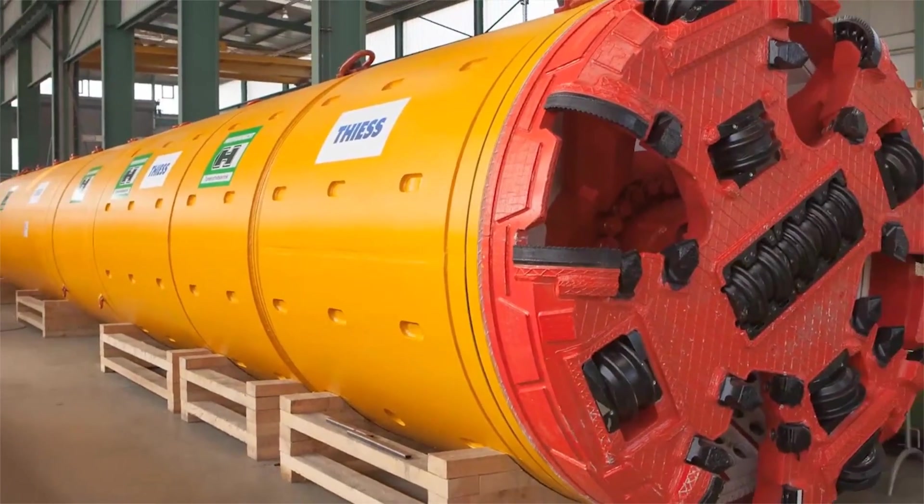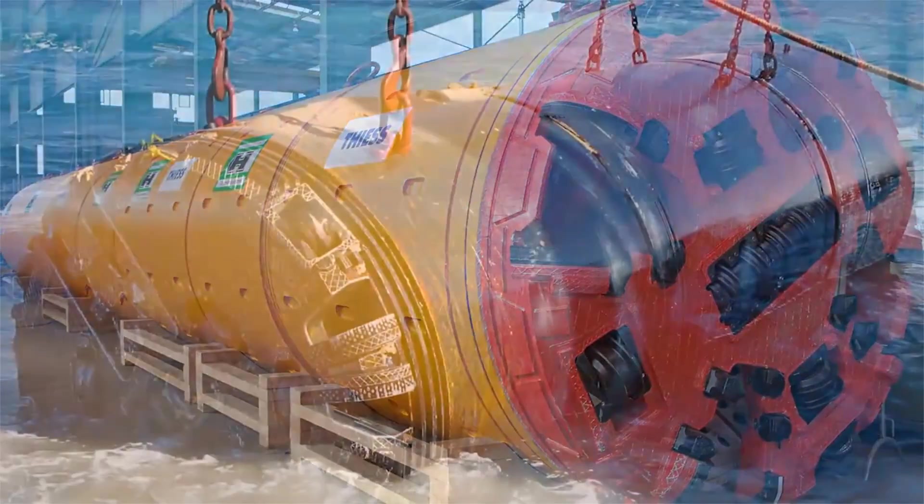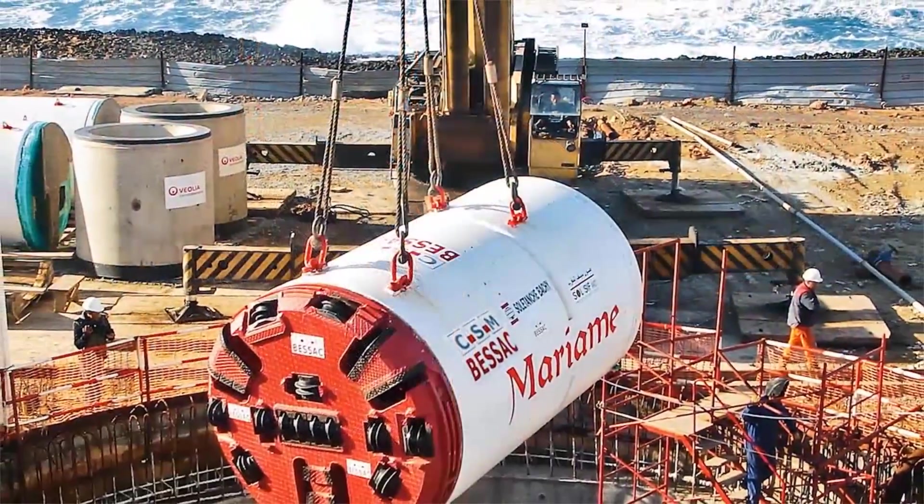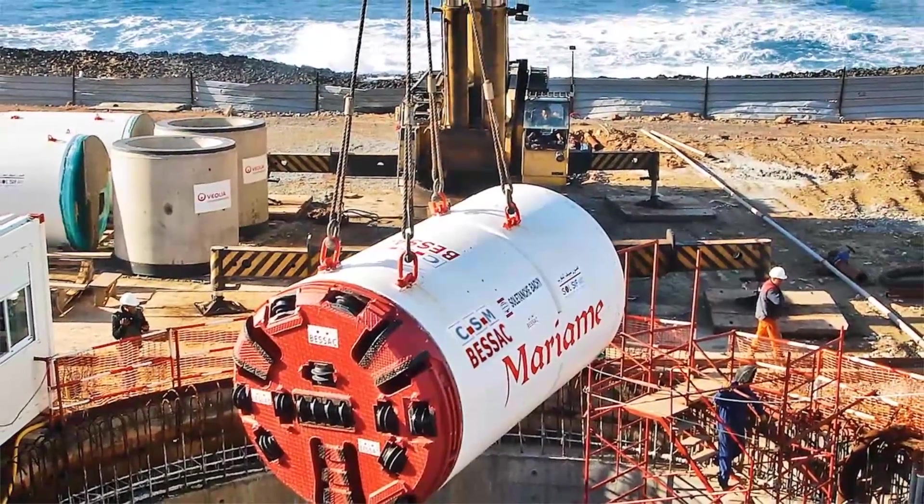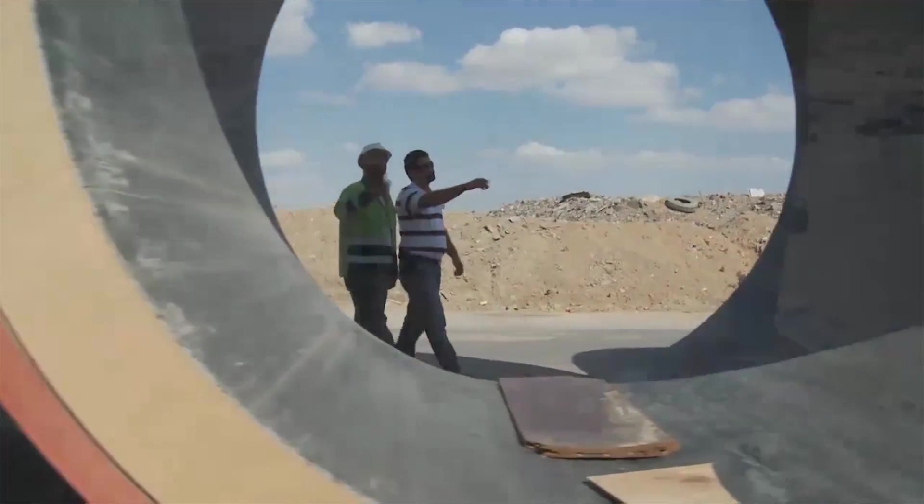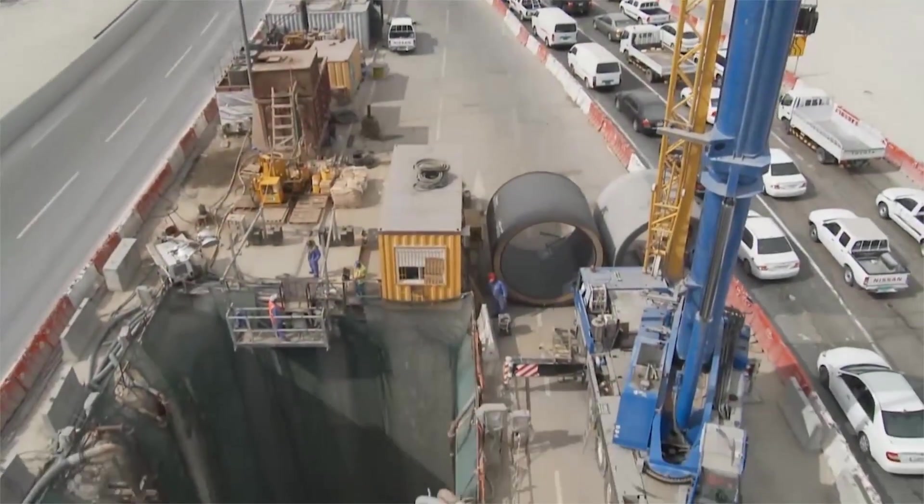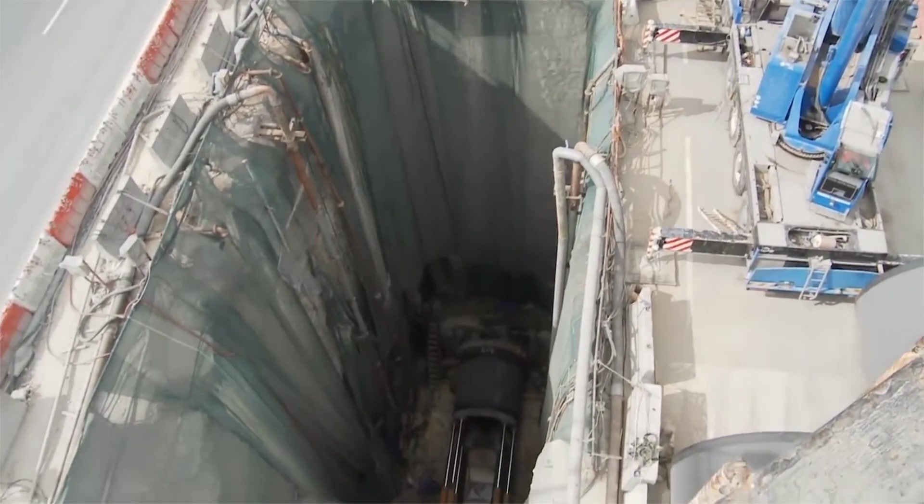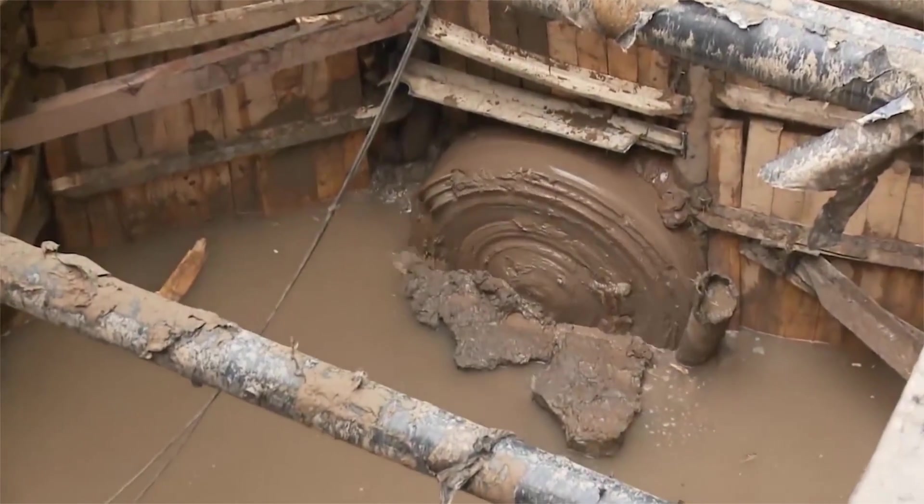The universal tunnel boring machine for all geological conditions, especially below groundwater level, is the AVN machine. The use of AVN machines in pipe jacking for tunnel cross-sections of 250mm to 4m is a particularly universal and efficient solution for installing pipelines underground.